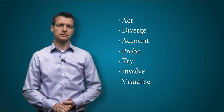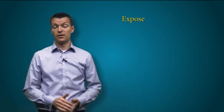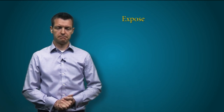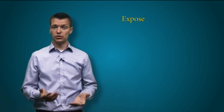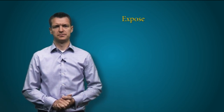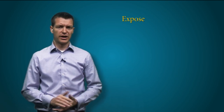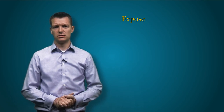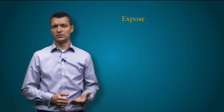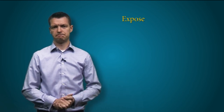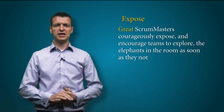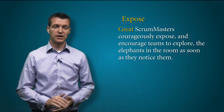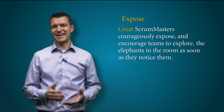Expose the elephants. Most teams have at least one problem that they are currently ignoring, avoiding, or skirting around — this is known as the elephant in the room, a big, uncomfortable topic that everyone knows should be addressed but might seem insurmountable. If the elephant is avoided for long enough, the team will develop coping mechanisms. The problem is, these coping mechanisms don't actually deal with the issue; instead, they make the problem even less likely to be removed, because now it doesn't seem quite as necessary anymore. Great scrum masters courageously expose, and encourage teams to explore, the elephants in the room as soon as they notice them. They don't judge, but neither will they let their team tolerate and get dragged down by these problems — instead, they offer to lead an exploration.